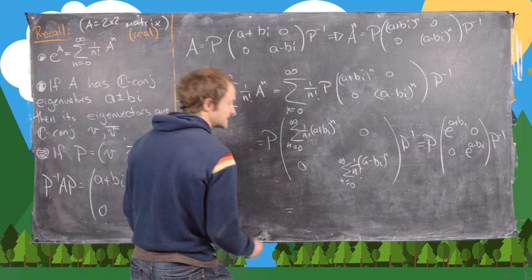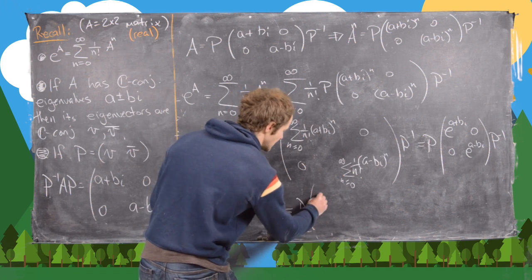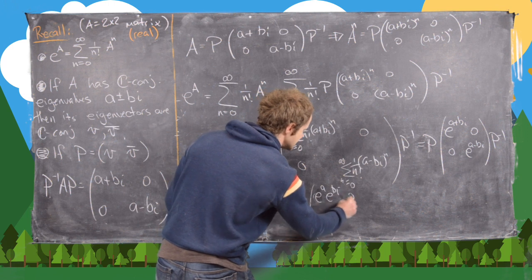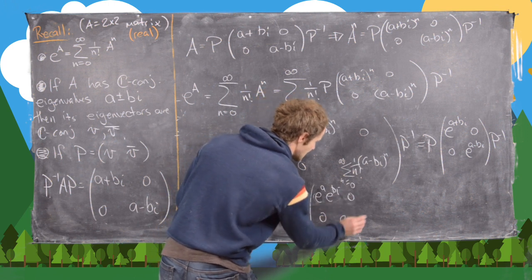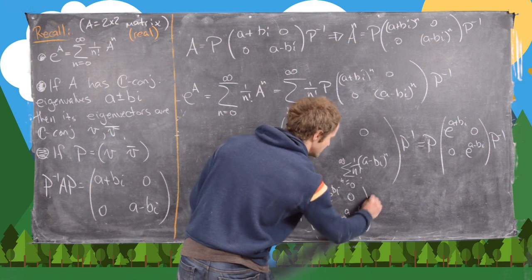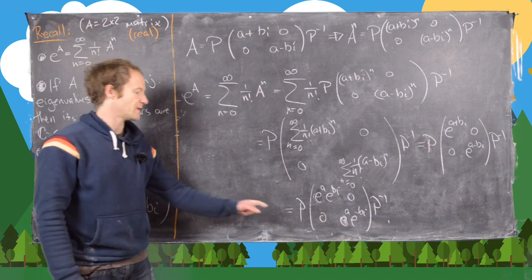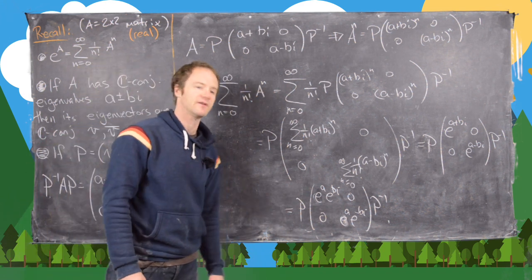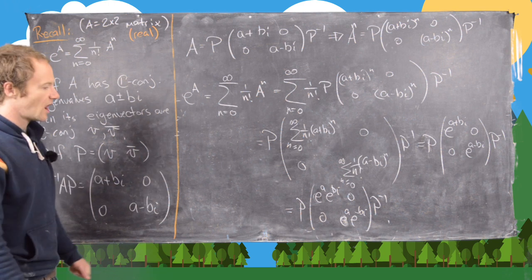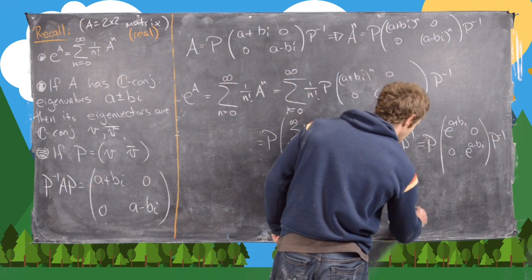Notice this is the same as P times the diagonal matrix with entries e to the A times e to the Bi and e to the A times e to the negative Bi, times P inverse. When you multiply through by P and P inverse, and since they have complex conjugates as their columns, what you'll end up with is a real matrix.